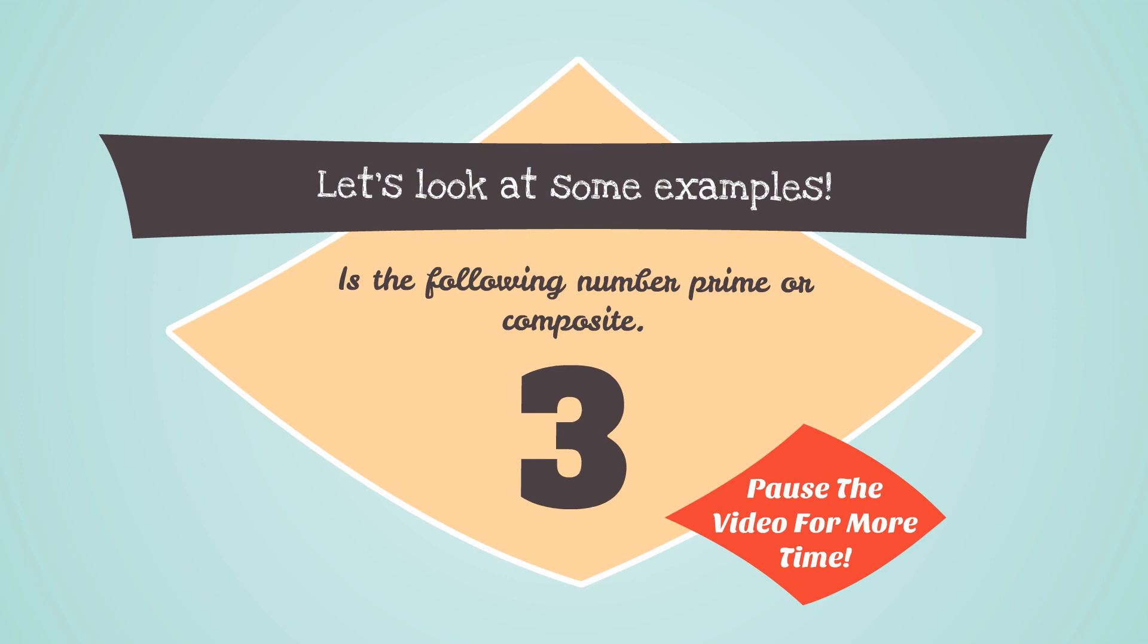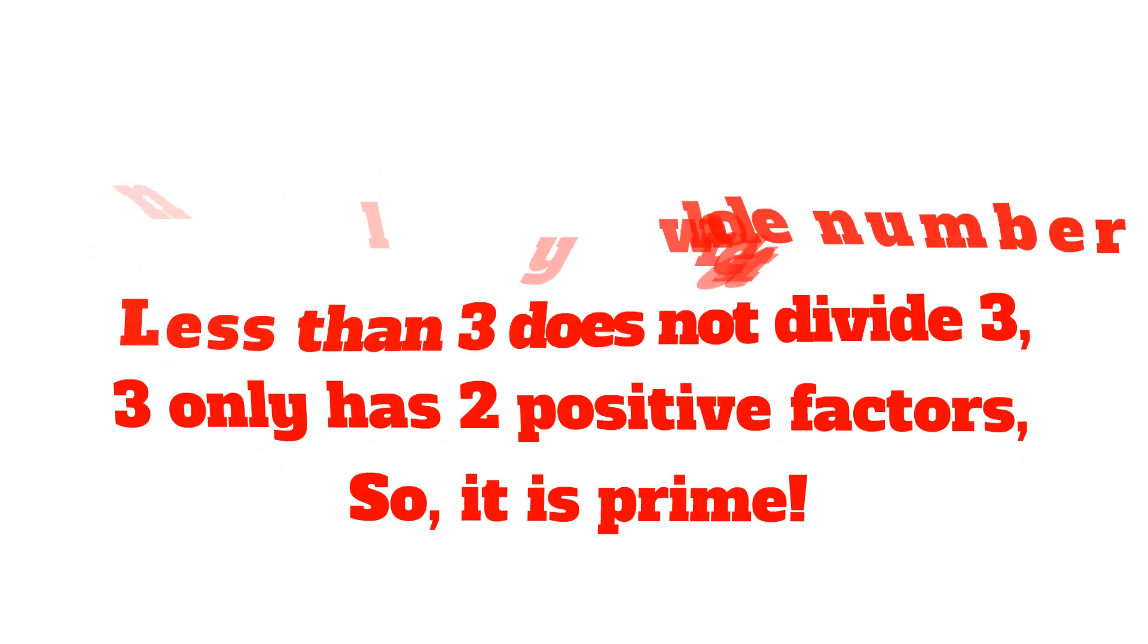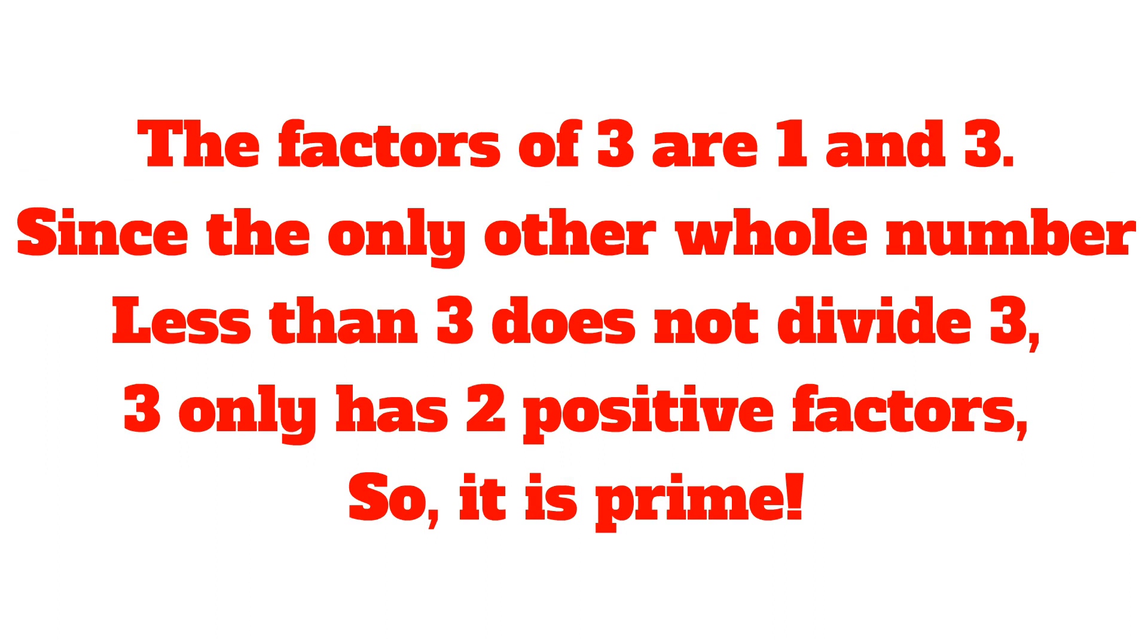Let's look at some examples. Is the following number prime or composite? 3. Pause the video for more time on this problem. The factors of 3 are 1 and 3. Since the only other whole number less than 3, which is 2, does not divide 3, 3 only has 2 positive factors, so it is prime.